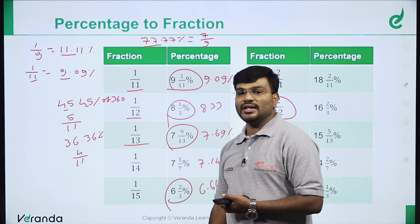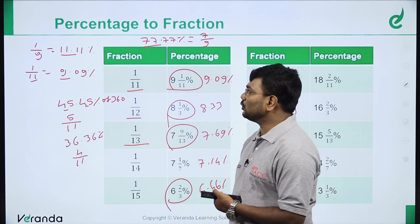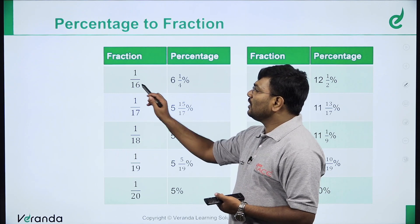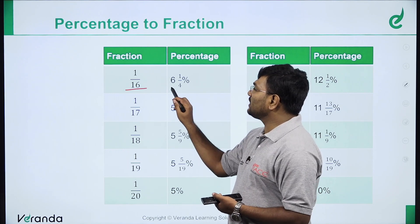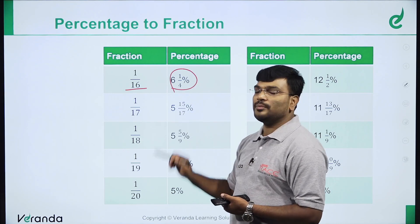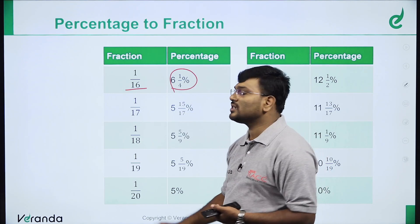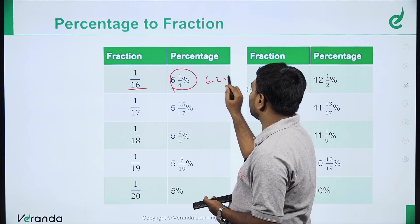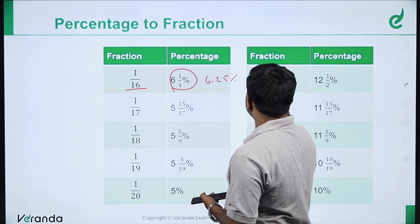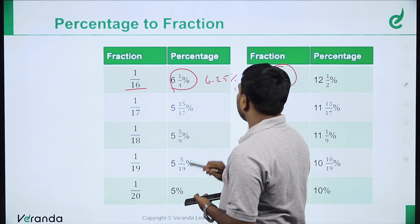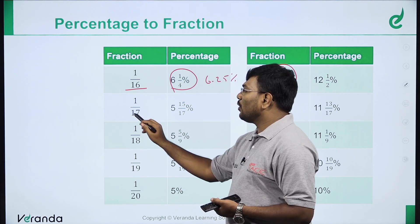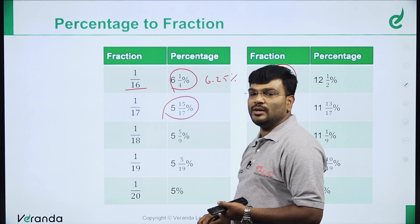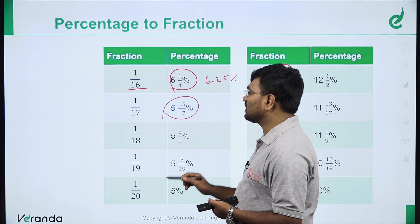1 by 13 is 7.69%. 1 by 14 equals 1 by 7 pattern at 7.14%. 1 by 15 is 6 2/3 percent or 6.66%. 2 by 13, 2 by 14 simplifies to 1 by 7. 2 by 15 is 1 by 3 pattern. 1 by 16 is 6.25%.